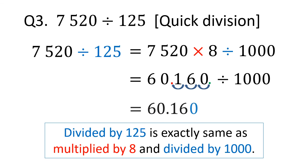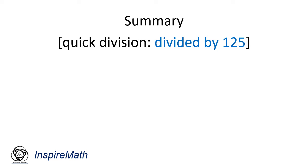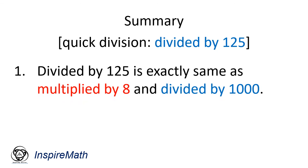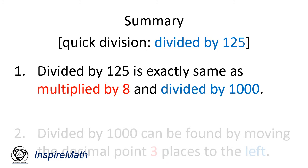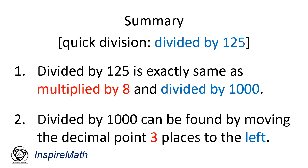We don't need the zero at the very right, so the final answer is 60.16. To summarize today's lesson: divided by 125 is exactly the same as multiplying by 8 and then dividing by 1000. Divided by 1000 can be found by moving the decimal point three places to the left.